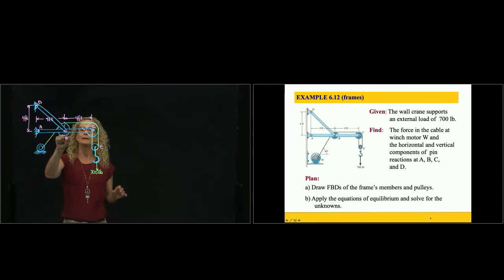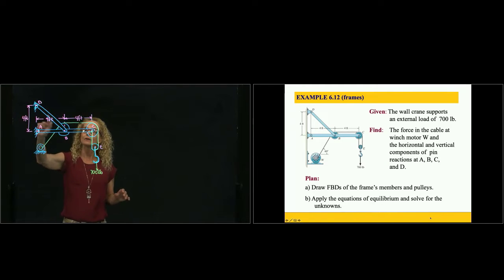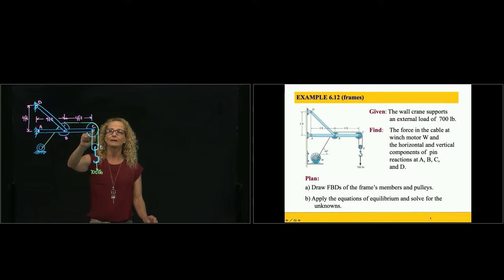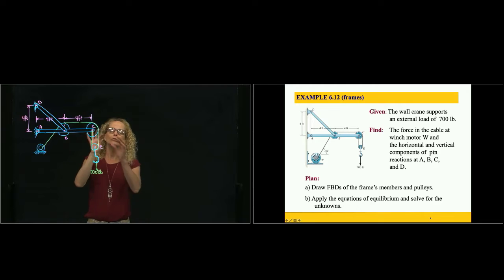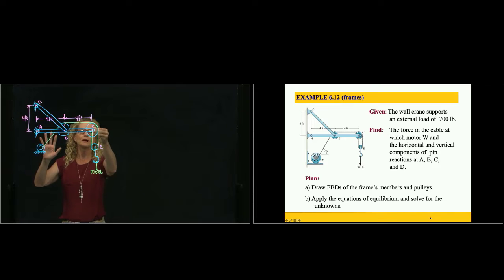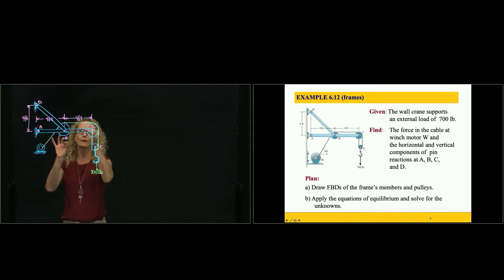Then I have a pin that holds the beam, this link over here, and the pulley. The rope goes through that pulley, and then I have another pin here that holds the beam with the pulley and this rope. Remember that the pins are three-dimensional, but we are only drawing a plane, and those elements are attached to that beam.